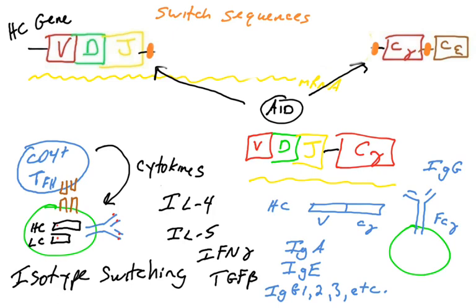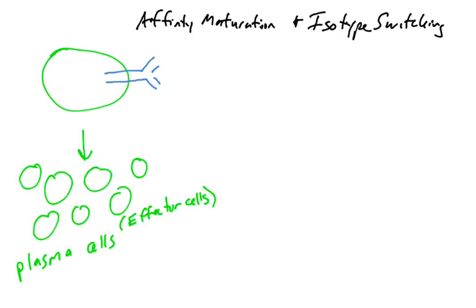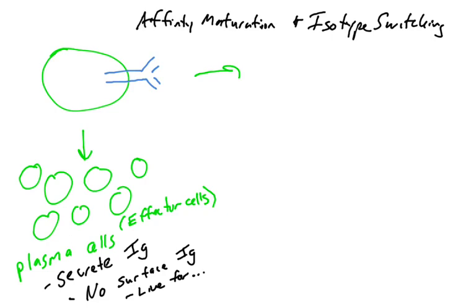We've done isotype switching, we've done affinity maturation, and now we finally have these B cells which make really high affinity antibody, which have made a very specific antibody. Now these B cells, which we have many of, more proliferation, more mitosis, some of them differentiate into plasma cells. Plasma cells are really the effector B cells. They are the cells that are going to help us combat the infection because they secrete immunoglobulin. It is isotype switched immunoglobulin. It is high affinity immunoglobulin. They typically don't have immunoglobulin on their surface anymore. They just go into secretion mode. Their cytoplasm actually is filled with ER and Golgi.